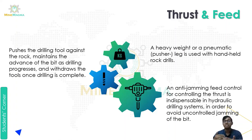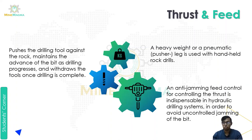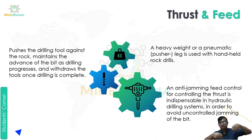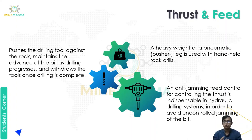An anti-jamming feed control for controlling thrust is indispensable in hydraulic drilling in order to avoid uncontrolled jamming of the bit. This controls vibration during the process, preventing uncontrolled jamming.